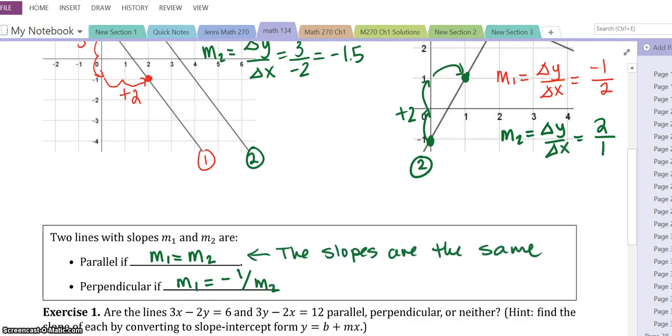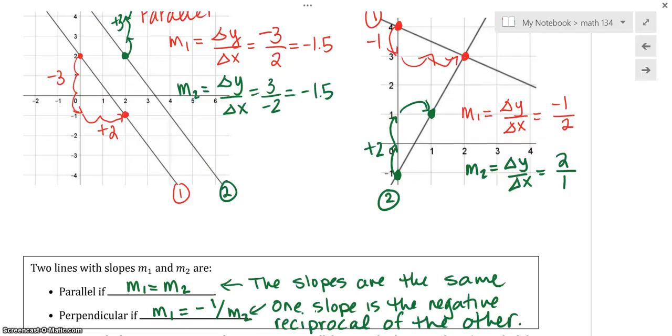So in general, the first one, when they're parallel, the slopes are the same. And the second one, perpendicular, we know one slope is what we call the negative reciprocal, which means it's flipped of the other.